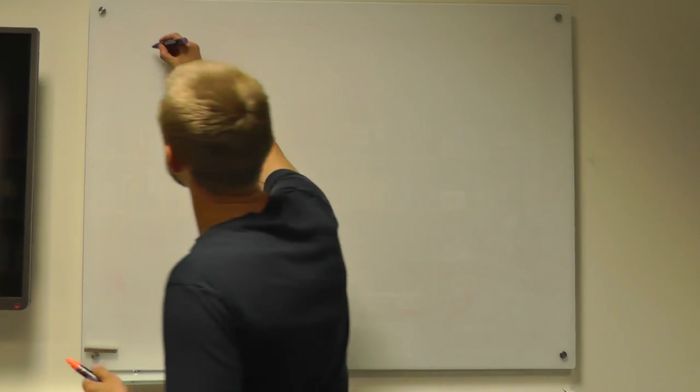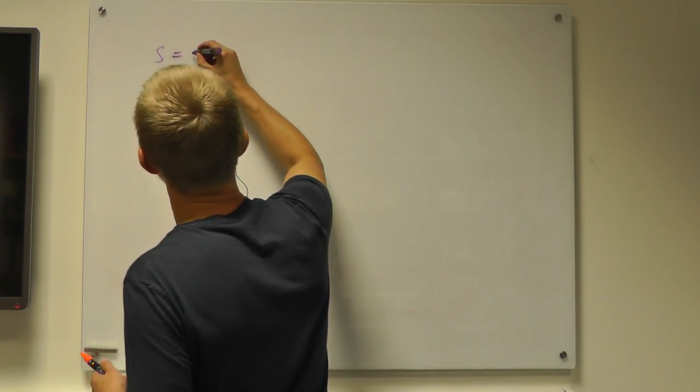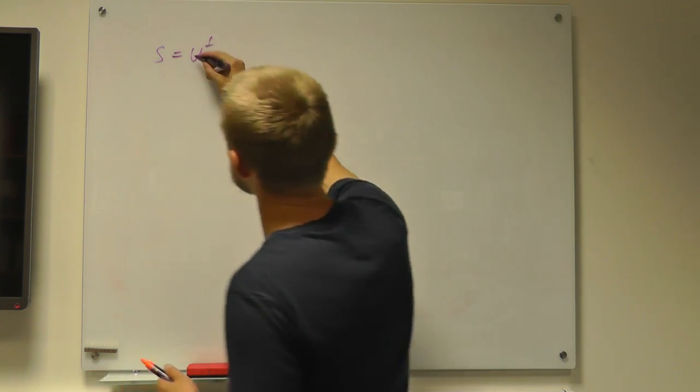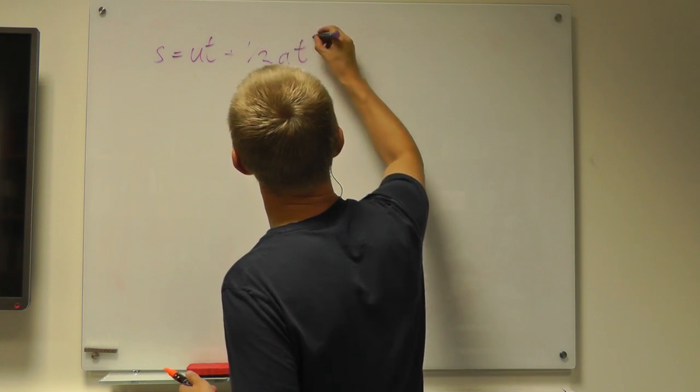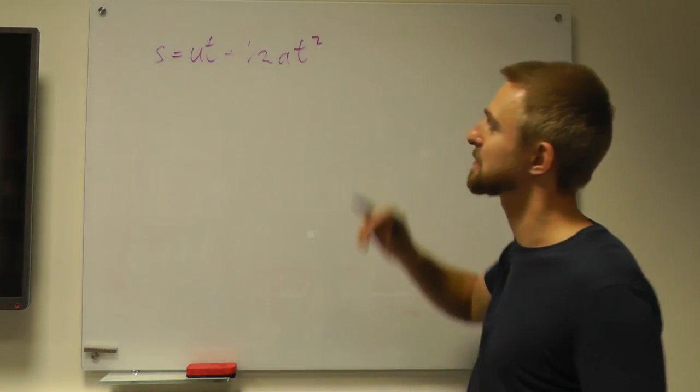In this case we're going to relate the displacement s equals ut, so that's the initial velocity times time, plus a half at squared, so that's acceleration times time squared.